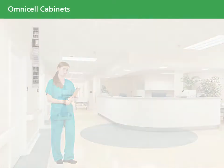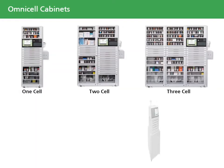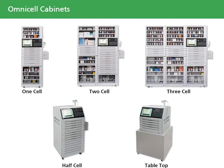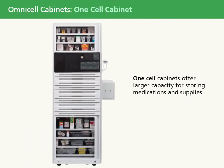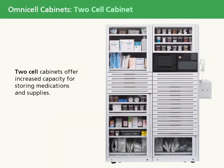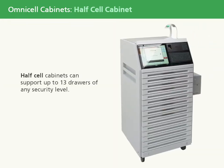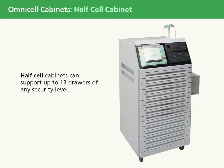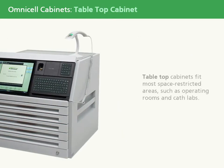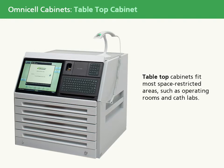OmniCell offers a variety of cabinets and cabinet configurations to fit your facility's needs. One-cell cabinets offer a larger capacity for storing medications and supplies. Two-cell cabinets offer increased capacity. Three-cell cabinets are OmniCell's largest and offer even more capacity. Half-cell cabinets can support up to 13 drawers of any security level. Table-top cabinets fit most space-restricted areas, such as operating rooms and cath labs.